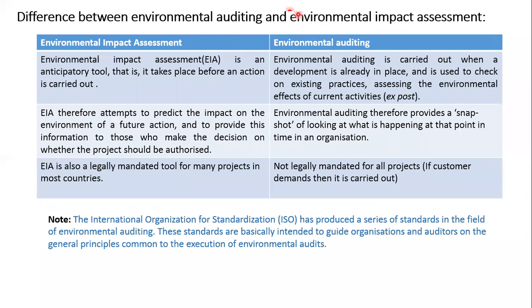You may think environmental auditing and environmental impact assessment are very similar, but they are not. Environmental impact assessment is an anticipatory tool — it takes place before the action or project. For example, before a civil engineering project is carried out, you study what the impact of the project will be. In contrast, environmental auditing is done after the project, when the development is already in place, to check on existing practices and assess the environmental impact of current activities.